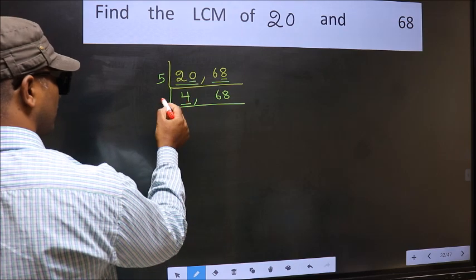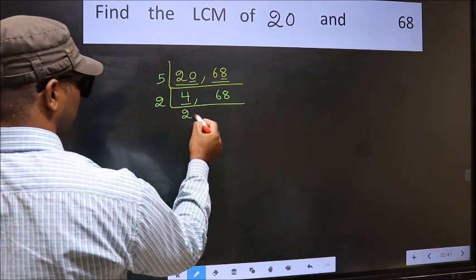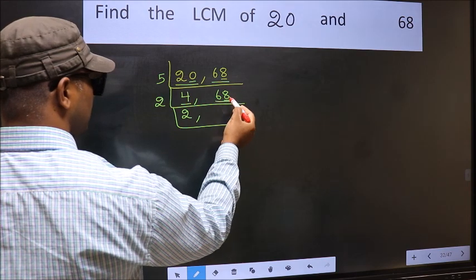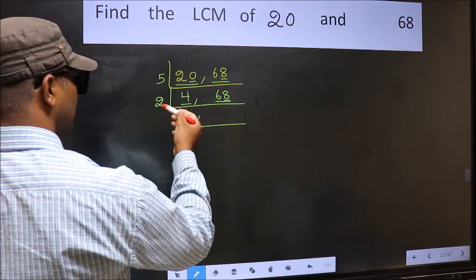Now here we have 4. 4 is 2 times 4. The other number 68. Last digit 8 even. So this is divisible by 2.